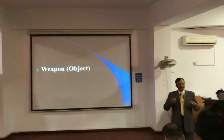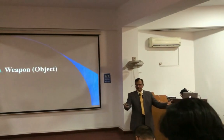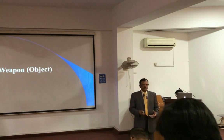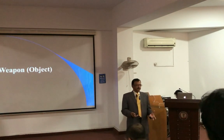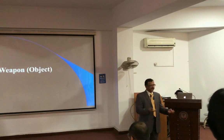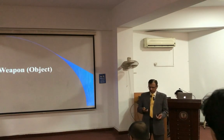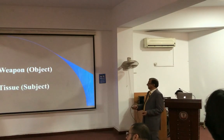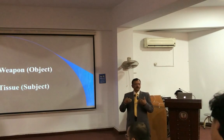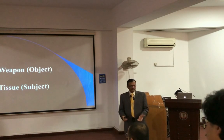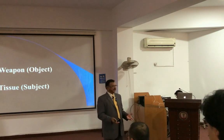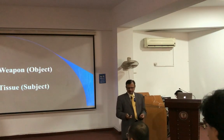The object is the weapon — anything can be an object. Everything becomes a weapon when you physically apply it with force to another person: a mobile, a book, a chair — everything becomes a weapon when force is applied. Then the subject is the tissue, the area where interaction occurs. Underneath there may be bone, soft tissues, or air — and these will change the appearance of the wound.